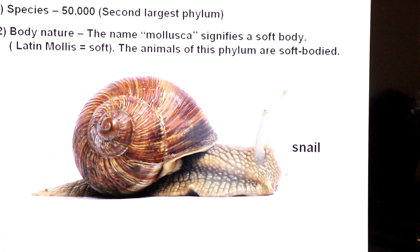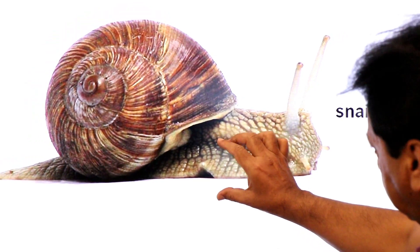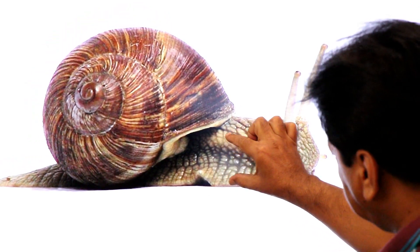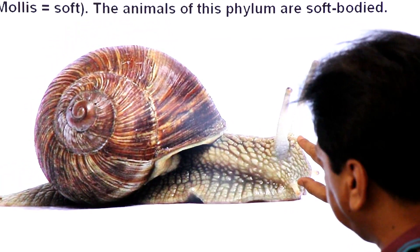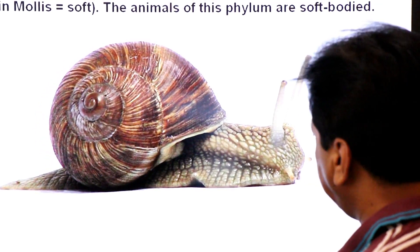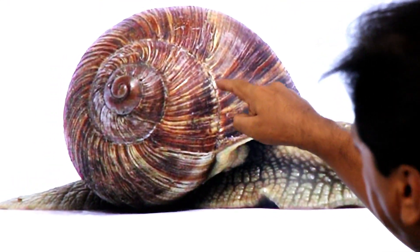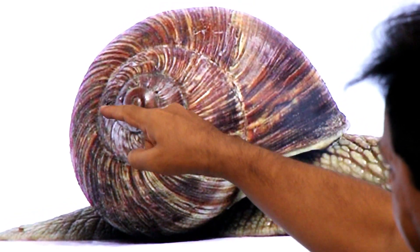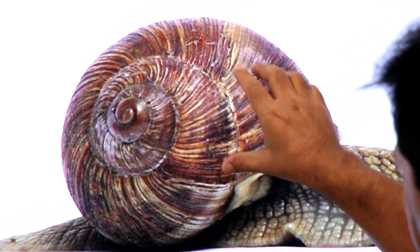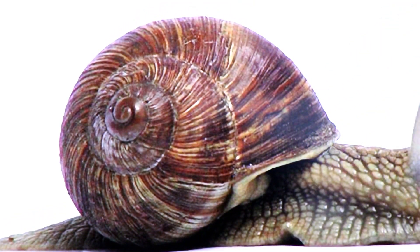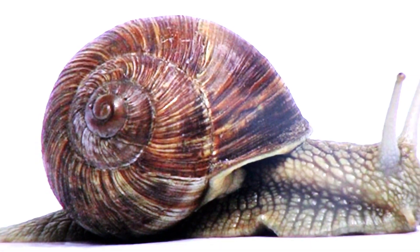Look at the diagram of the snail. Snail is a member of phylum Mollusca. You can see its body is soft. Here you see tentacles — this is the head region. Its body is covered by a hard shell externally, which is the exoskeleton, while internally the body is soft.